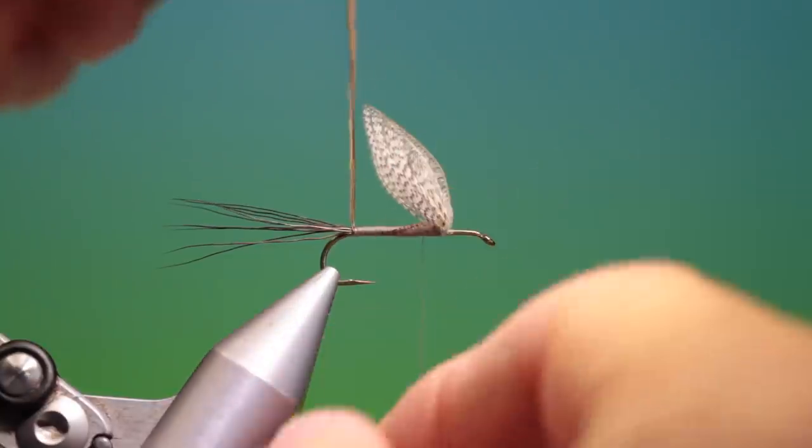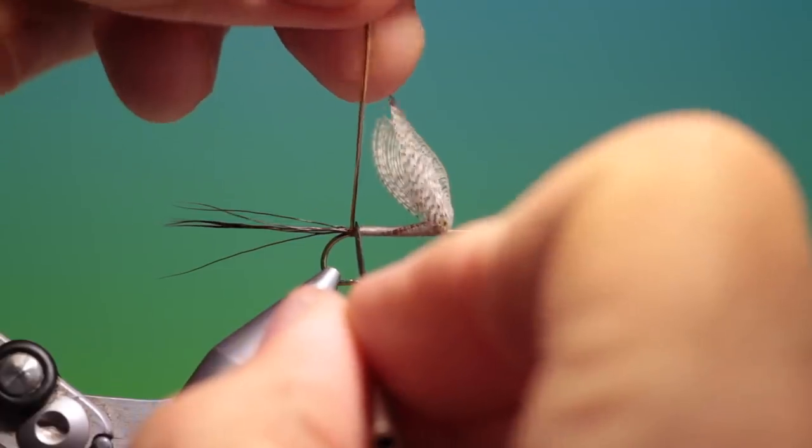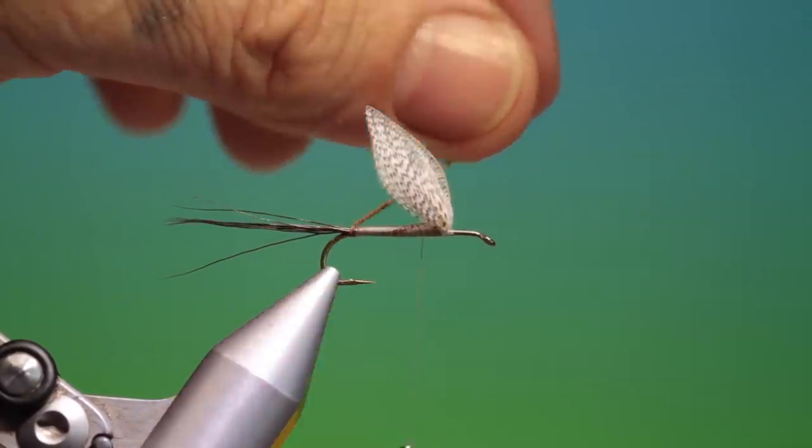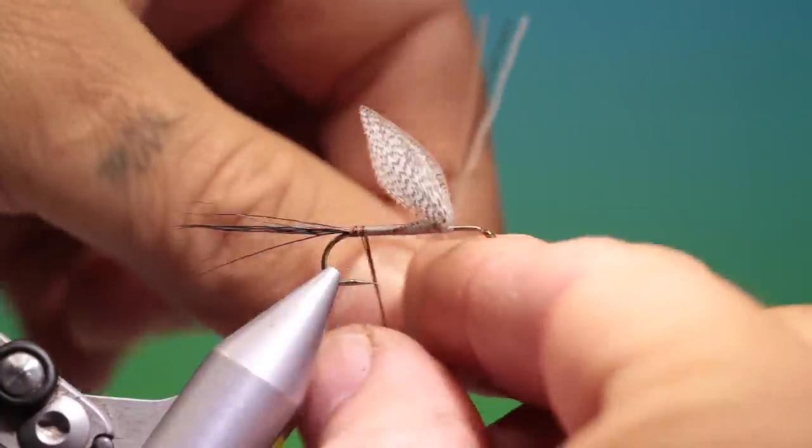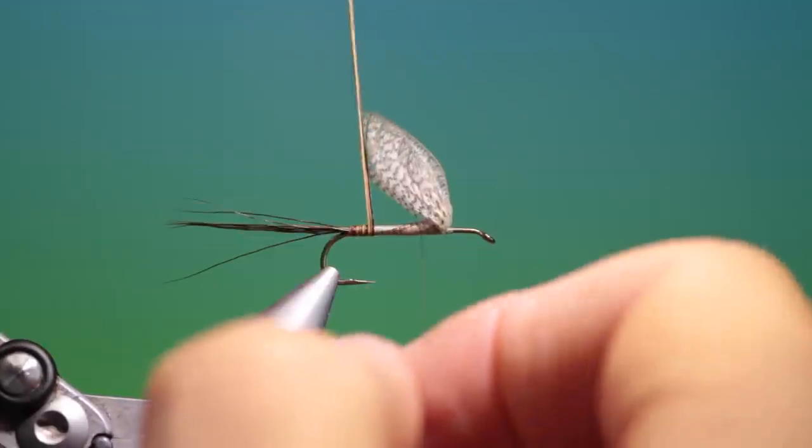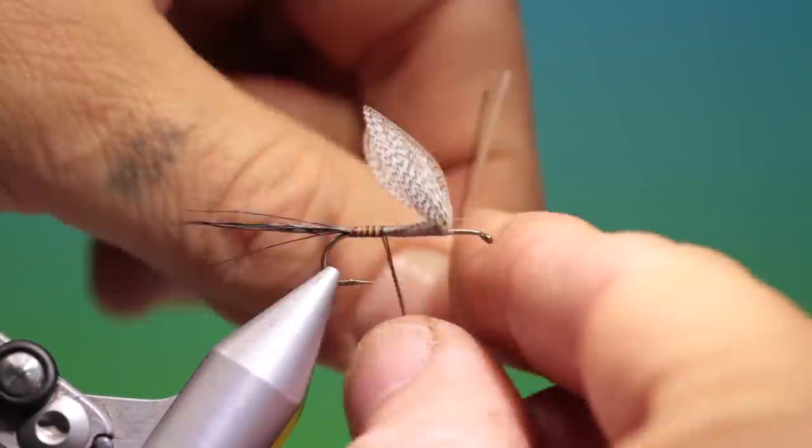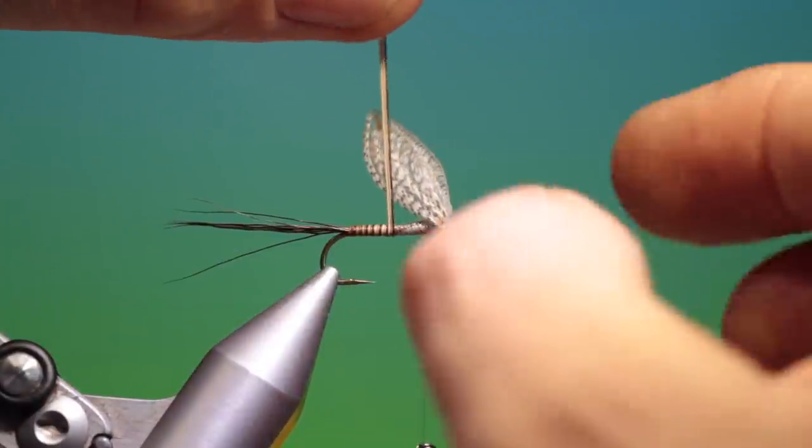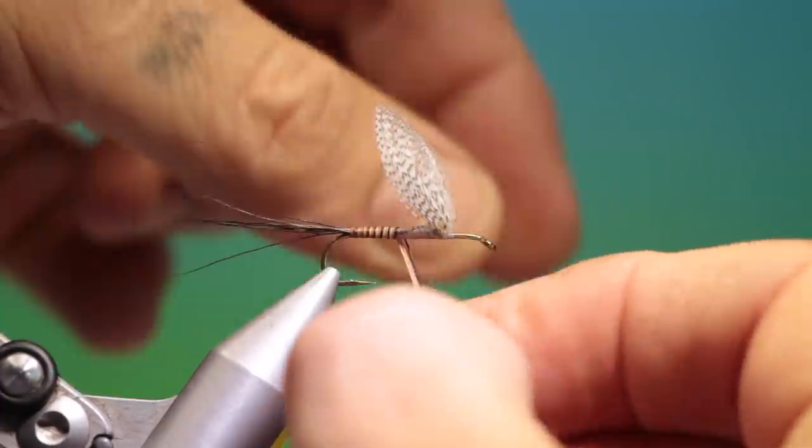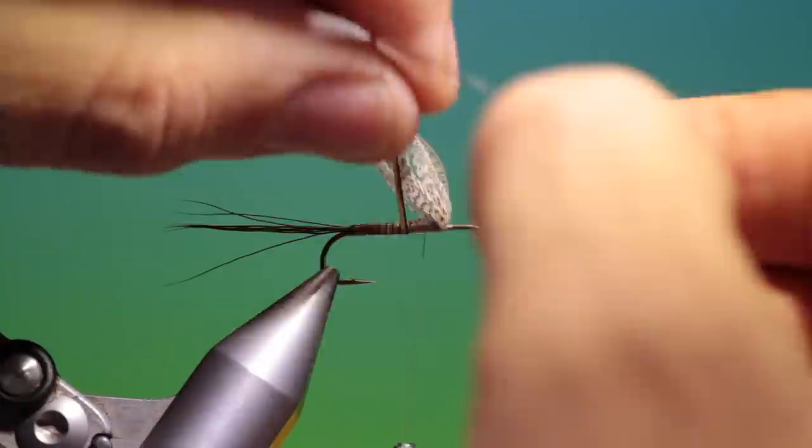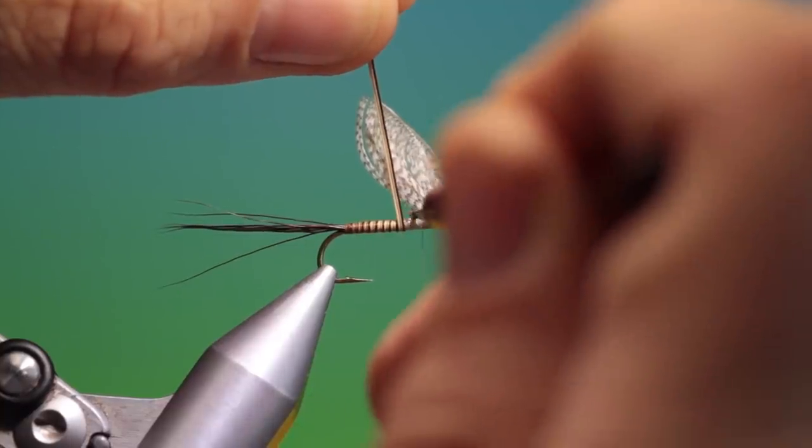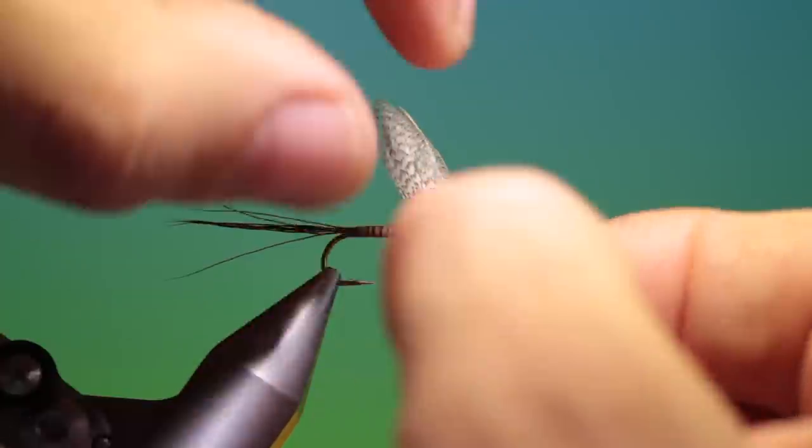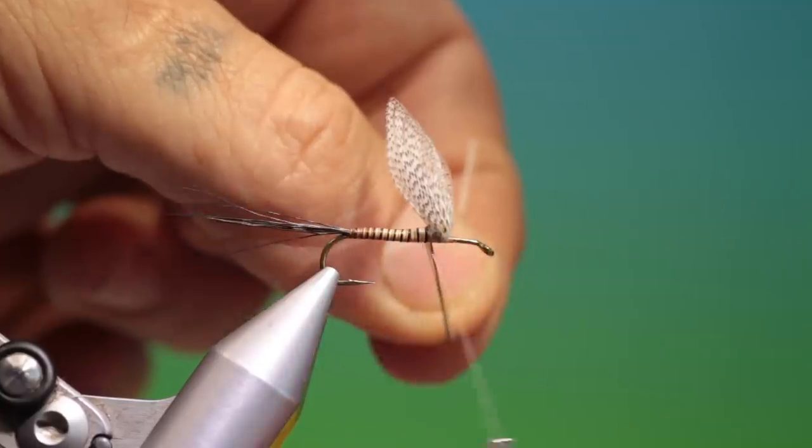And we can take our moose mane, get that first turn in. There we are. And then we can wrap our segmented body. Keep the hairs parallel the whole time, don't twist them. And you can see how the body is changing color very subtly as we approach the thorax. Gives a very realistic body. And go up. Lift those out of the way. One more and we're done.